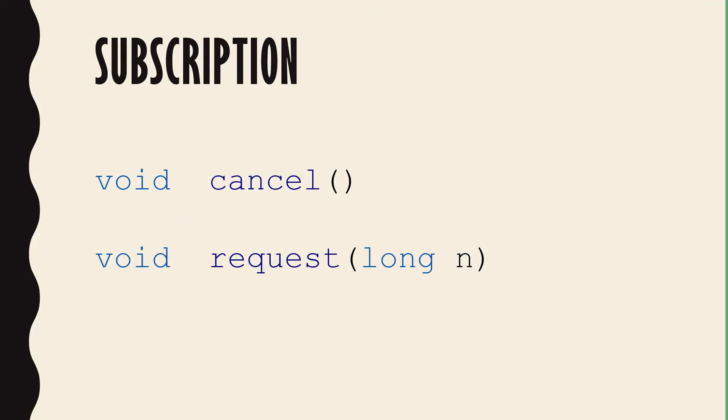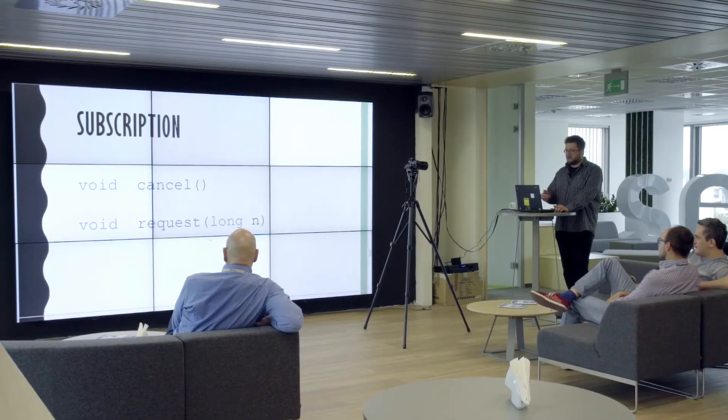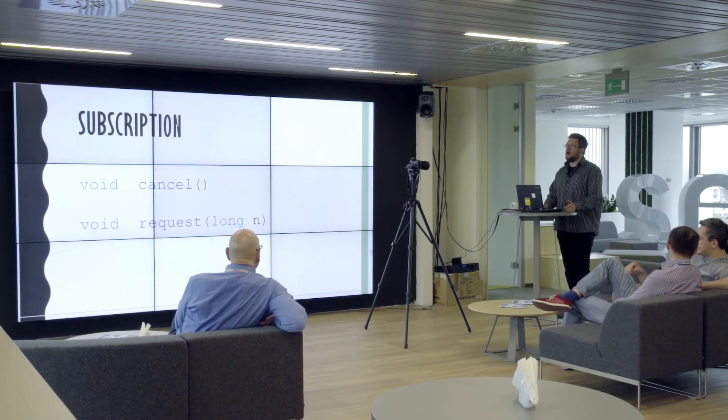Another interface is Subscription. Subscription has two methods. The first one is cancel — both the publisher and the subscriber can cancel a subscription. And one more is request. Each time a subscriber wants another pack of data, it needs to explicitly ask the subscription for it. Without it, it will not receive them.